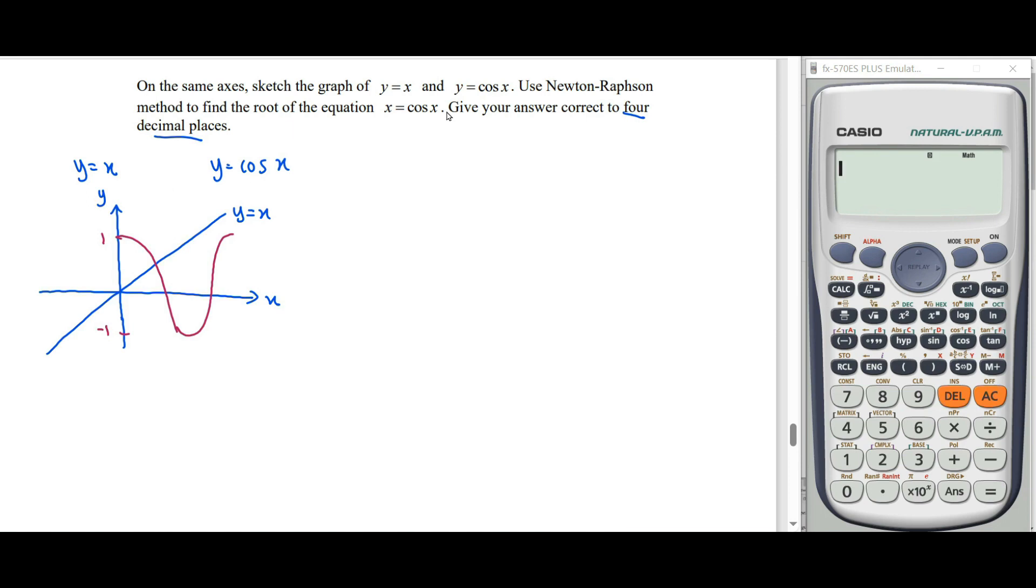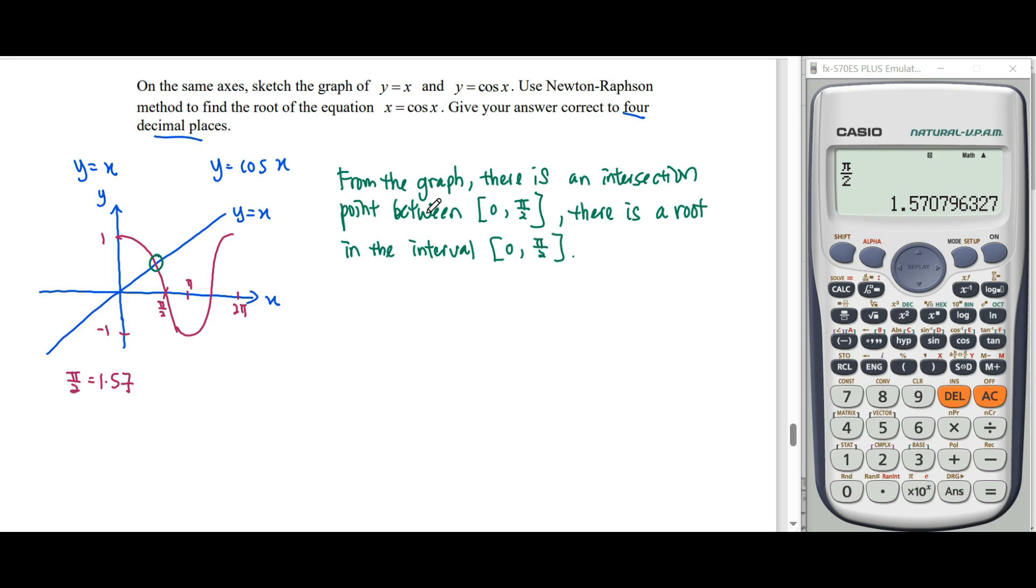The whole one will be 2π, here will be π, so here will be π over 2. π over 2 is equivalent to 1.57. From the graph we notice there is an intersection point between 0 and π over 2, so there is a root in the interval. We identify our initial root using graphical method.